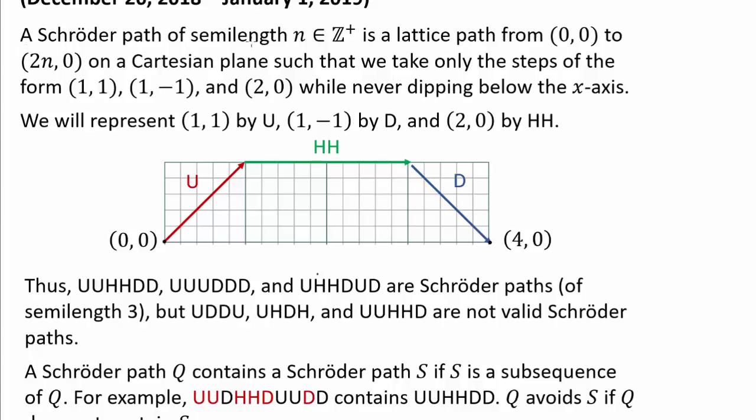A Schröder path of semi-length n, which is a positive integer, is a lattice path from (0,0) to (2n,0) on a Cartesian plane such that we take only the steps of the form (1,1), (1,-1), and (2,0).